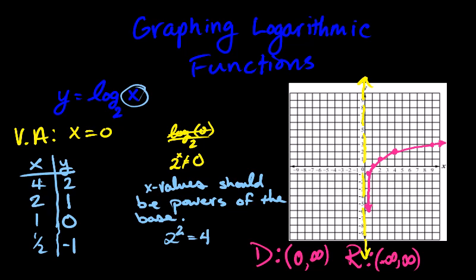Okay. Got to find a vertical asymptote. That's the first thing. And then you have to find points that you're going to put on your graph. So let's try to make it a little bit more exciting.